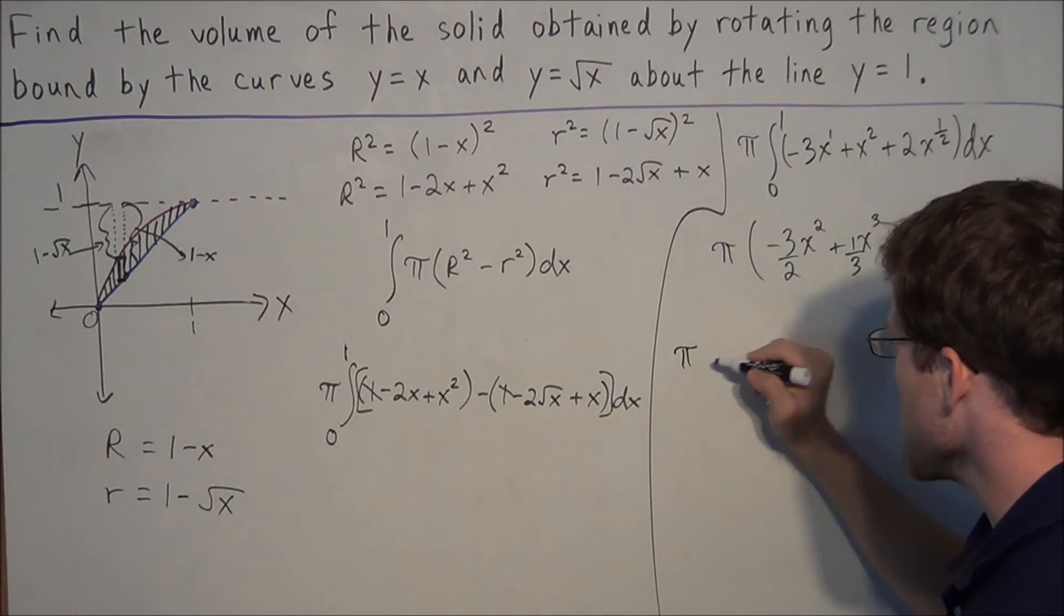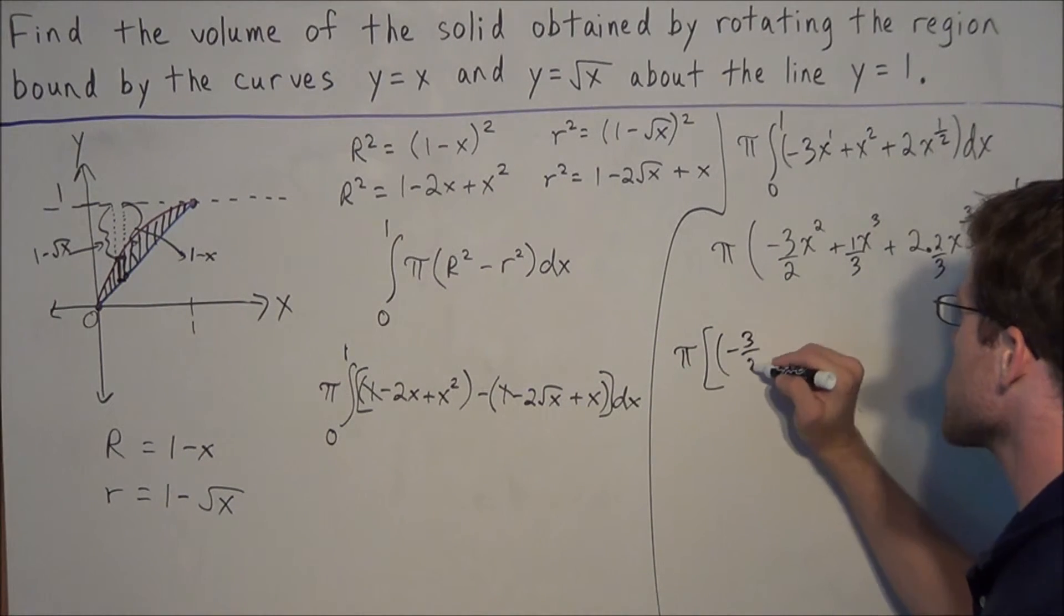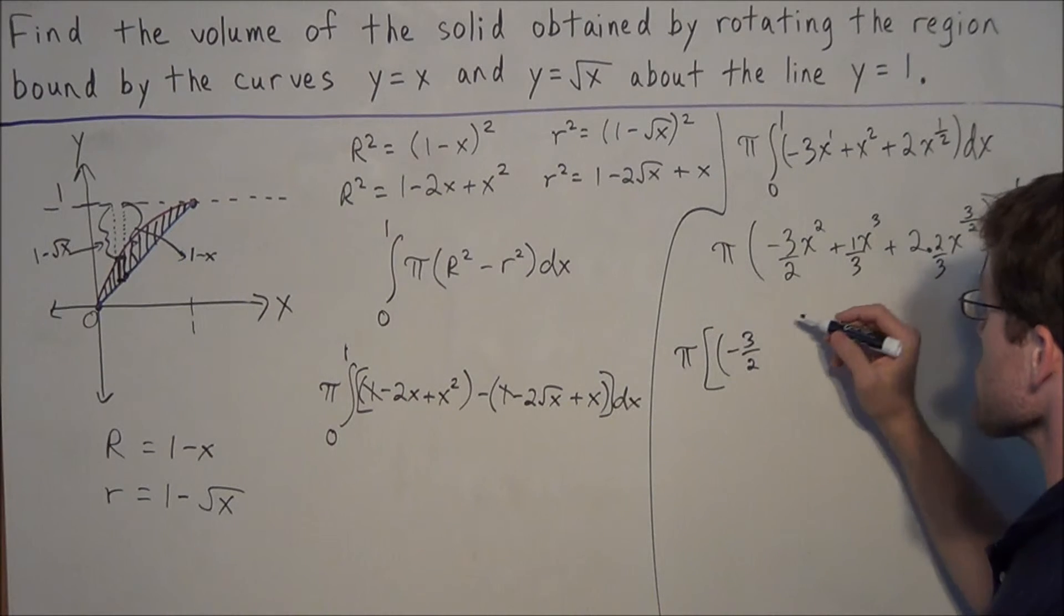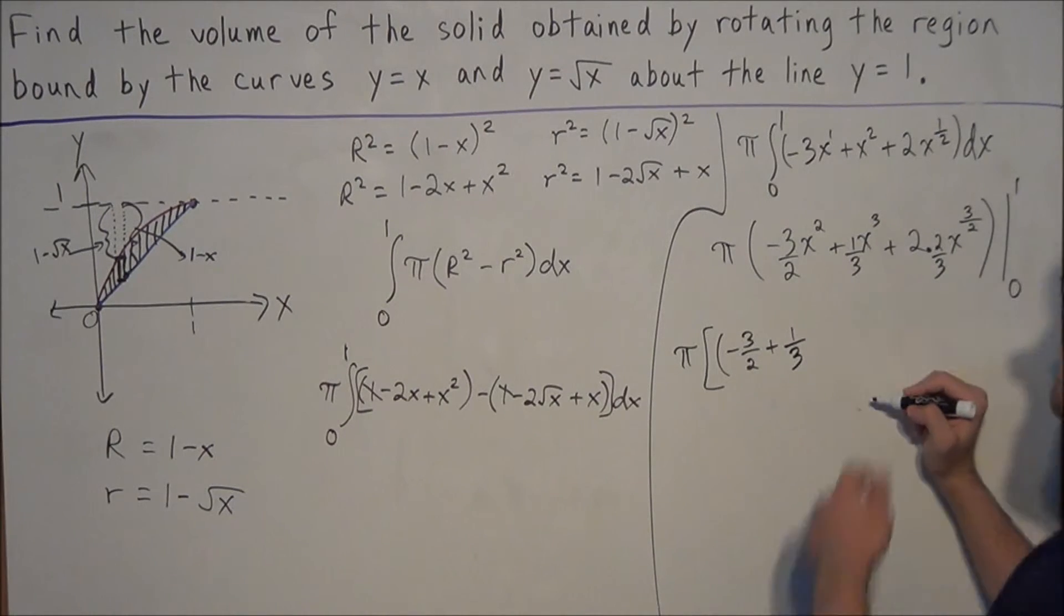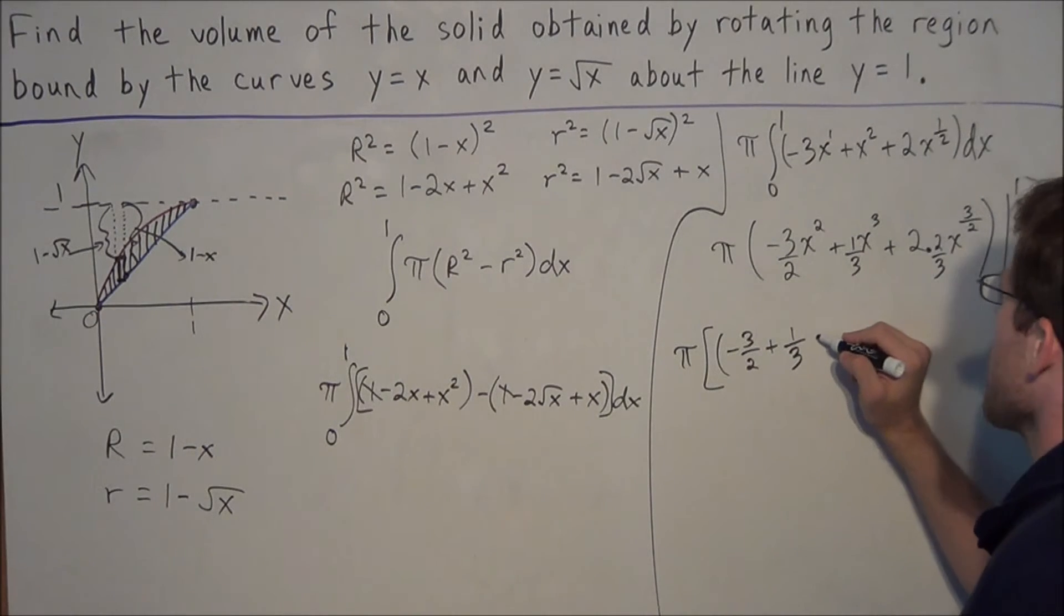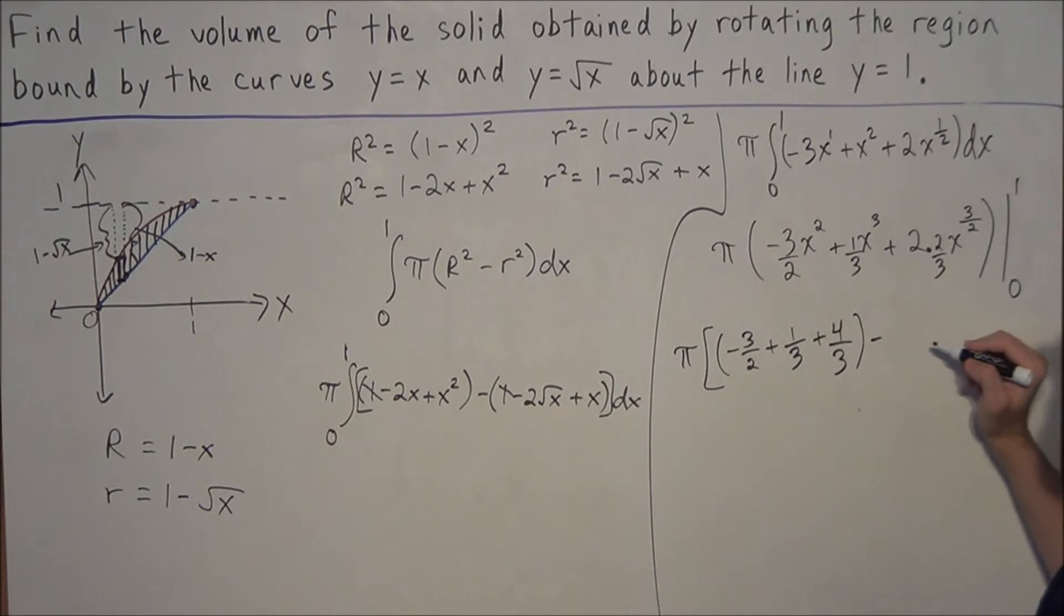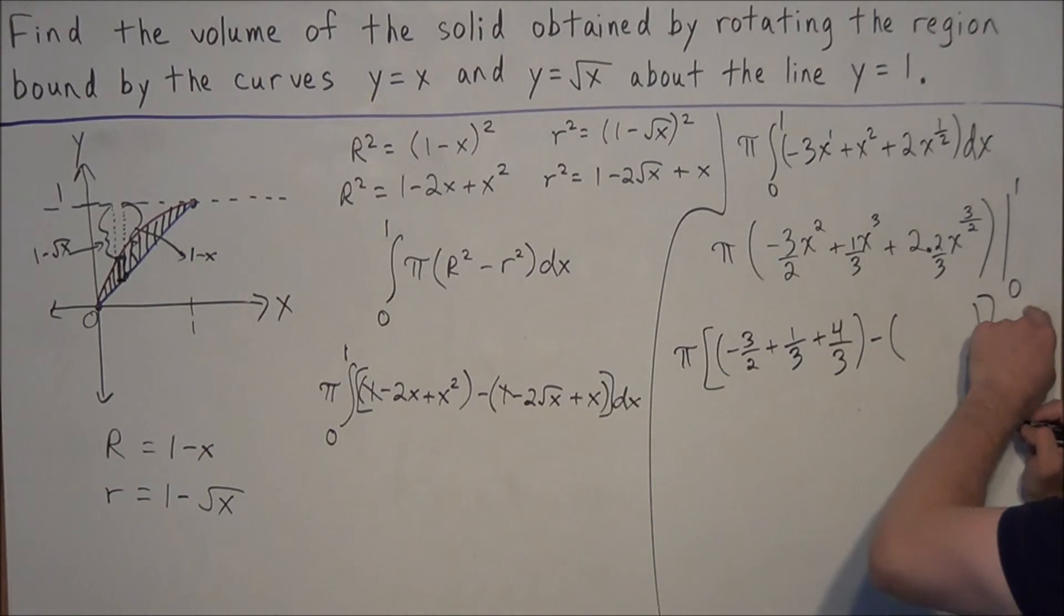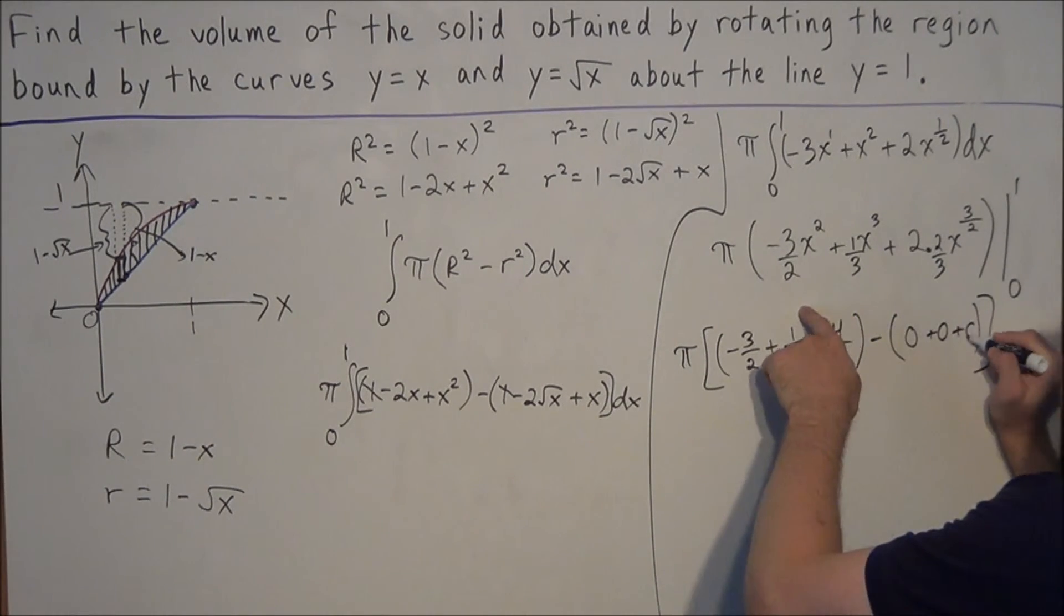So for the next line, we have π times, and we'll throw this in brackets, we have negative 3 halves. So now what we're doing, just to slow it down a bit, we're plugging in 1 into this expression. So we have negative 3 halves times 1 squared, plus 1 third times 1 to the third is 1. So plugging in 1 is very easy, because all we generate is the coefficients. And we have plus 2 times 2 thirds is 4 thirds, here like this. And now we have to subtract the result when we plug in 0. So remember, now we have to plug in the lower limit. And when we plug in 0, conveniently enough, everything cancels out. So we have 0, plus 0, plus 0.